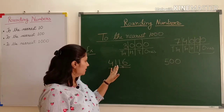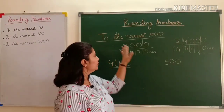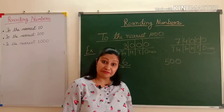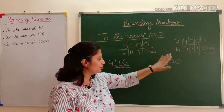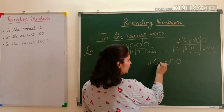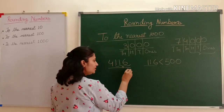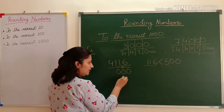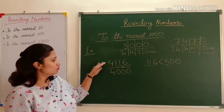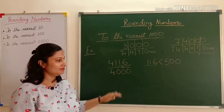Take the number 4116. The hundreds, tens, and ones digits form the number 116. Remember: for nearest ten we compared with 5, for nearest hundred we compared with 50, and for nearest thousand we compare with 500. Here 116 is smaller than 500. When the number is smaller than 500, we place zero in the ones, tens, and hundreds places and keep the thousands digit as it is. When I round off 4116 to the nearest thousand, the number is 4000.